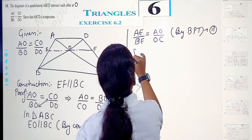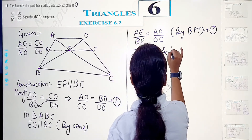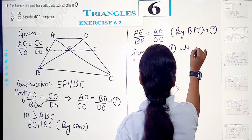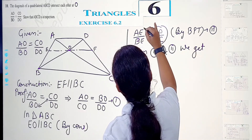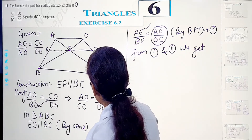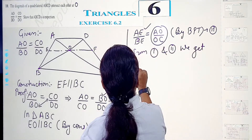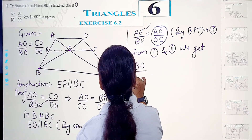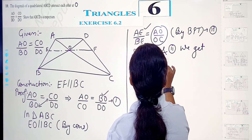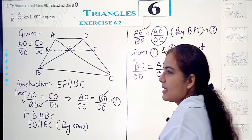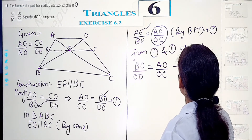From equations 1 and 2, we get that AO/OC equals both AE/BE and BO/OD. So let's write: BO/OD = AO/OC. This is equation number 3.